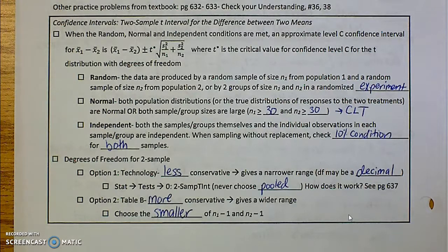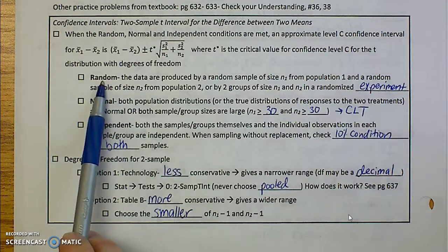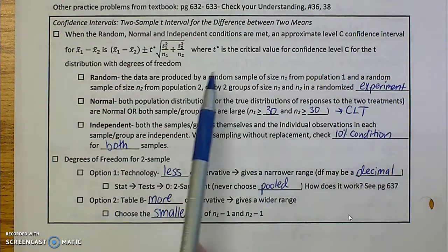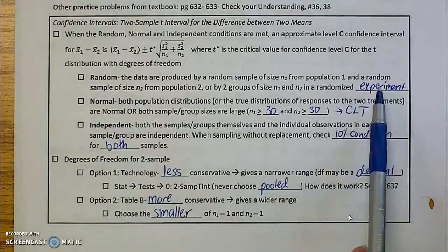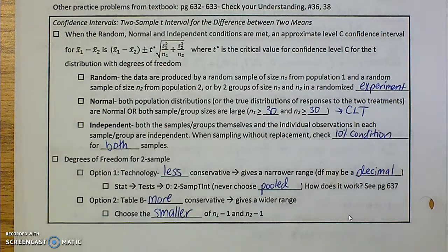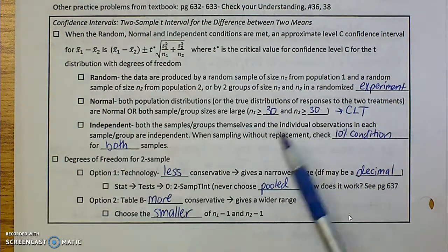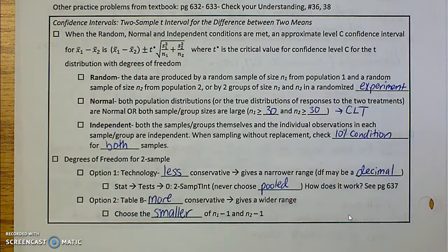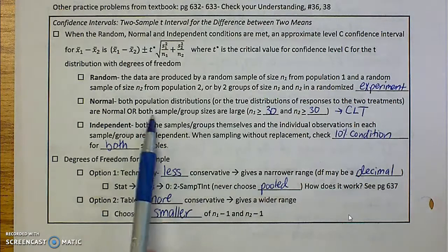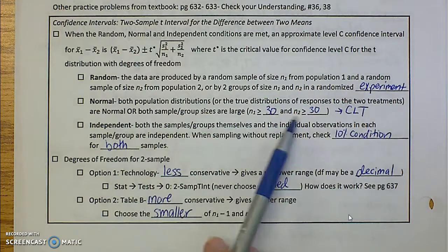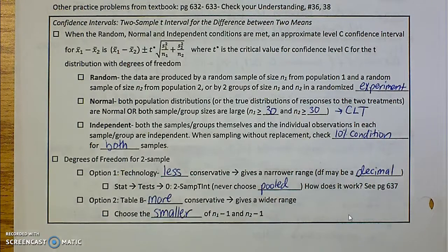We go into a little bit more detail about our conditions. Random: we know that both of them are produced by random samples or it's a randomized experiment. So there's a difference. It could be an observational study where they do sampling or it could be a randomized experiment. Either one works. Normal: if either both populations are normal or both groups are larger than 30. And remember, if they are not, you're going to have to graph your data and look at it to see what it looks like, looking for skew and outliers.